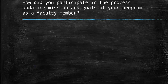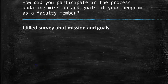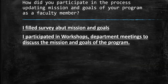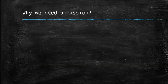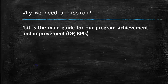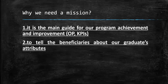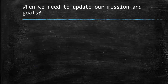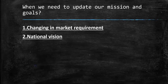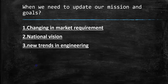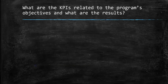How did you participate in the process of updating the mission and goals of your program as a faculty member? For example: I filled out a survey about mission and goals, and I participated in workshops and department meetings to discuss the mission and goals of the program. Why do we need a mission? It is the main guide for our program achievement and improvement, linked to our operational plan and key performance indicators, and it tells beneficiaries about our graduates' attributes. Why do we need to update our mission and goals? Changing market requirements, national vision, new trends in engineering, and feedback from stakeholders.